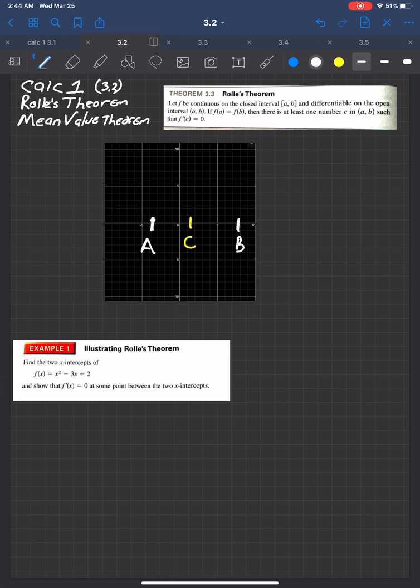But of course, all analogies are going to start to fall apart if you push them too far in mathematics. But the idea is pretty simple. It just says, look, let's just assume that some function is continuous from A to B. So I'm not going to draw it yet, but I will be able to draw this function without ever lifting my stylus. Now, it's differentiable from A to B, but not including A or including B.